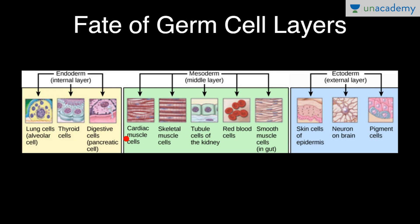Cardiac muscle cells, skeletal muscle cells, tubule cells of the kidney, red blood cells, smooth muscle cells in gut — these are derived from mesoderm, that is the middle layer.